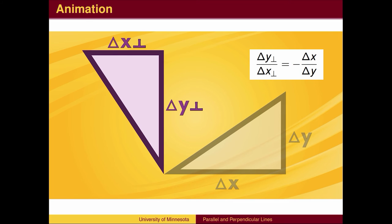The new slope is the negative reciprocal of the old slope. For example, if the old slope was 3 fourths, the perpendicular slope would be negative 4 thirds.